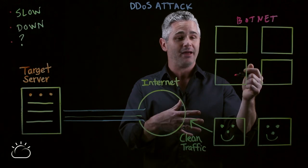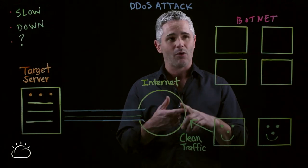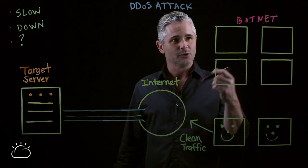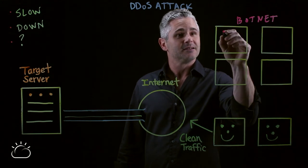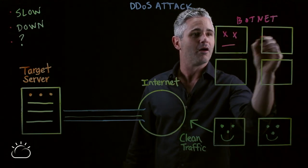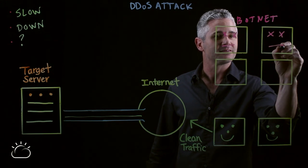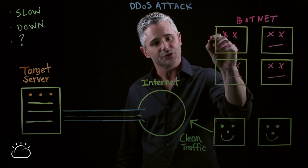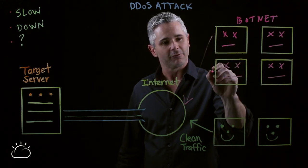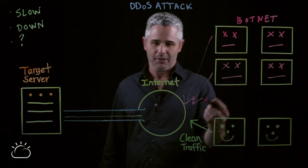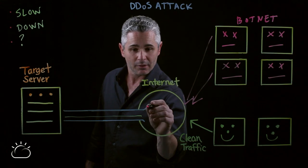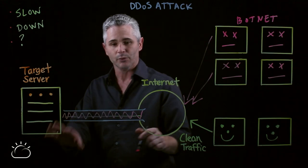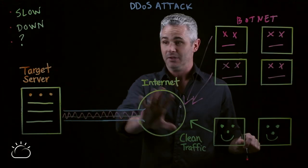The attacker can tell that botnet what to do, exactly for how long, and exactly when he wants to do it. So when the attacker is ready to start the attack, they call on all of these hacked computers or robots within the botnet and start to generate traffic from all of these systems over the internet.